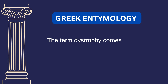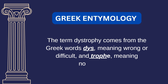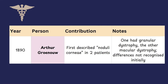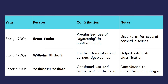The word dystrophy comes from the Greek word 'dys', meaning wrong or difficult, and 'trophy' means nourishment — so literally it means faulty nourishment. In ophthalmology, the term was first used by Grono back in 1890. He described two patients with nodular cornea, and interestingly we now know they had two different conditions: one had granular dystrophy and the other had macular dystrophy. After Grono, the term gained popularity through Ernst Fuchs, Wilhelm Uthoff, and later Yoshiharo Yoshida. Over time, our understanding and classification evolved but the name itself stuck.